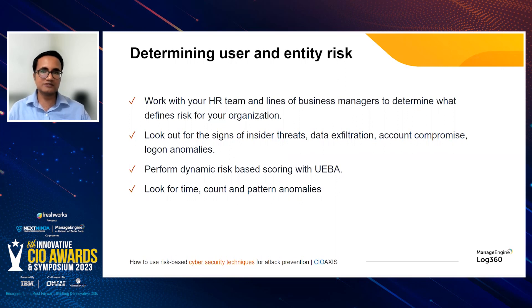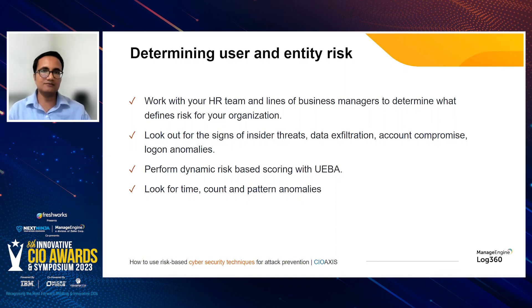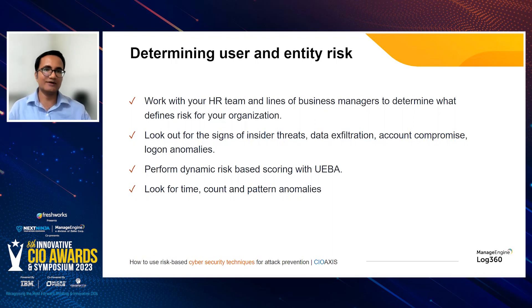Anomalies can be determined by looking closely at time, count, and pattern anomalies. With UEBA you don't have to write rules — it is powered by machine learning and artificial intelligence, learning from past behavior. A time anomaly happens when an activity is performed at a time it is not expected. A count anomaly is when an aggregate number of events in a specific time period exceeds what is expected — for example, 100 accesses of a critical file server between 10 and 11 a.m. when only 20 were expected. A pattern anomaly happens when there is a strange sequence of events never or rarely seen before.